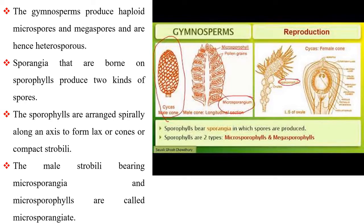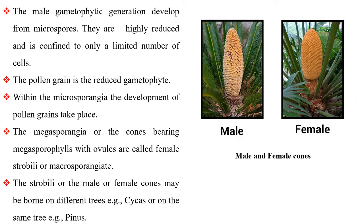The gymnosperms produce haploid microspores and megaspores and are hence heterosporous. Sporangia that are borne on sporophylls produce two kinds of spores. The sporophylls are arranged spirally along an axis to form lax or cones or compact strobili. The male strobili bearing microsporangia and microsporophylls are called microsporangiate. The male gametophytic generation develops from microspores and is highly reduced, confined to only a limited number of cells. The pollen grain is a reduced gametophyte.